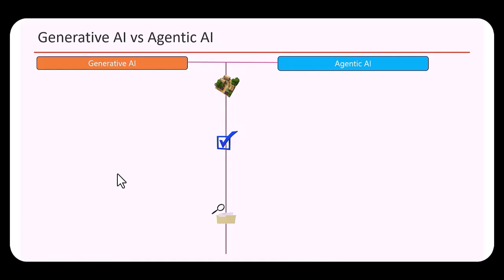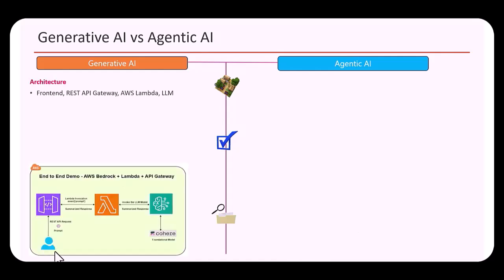Let's look at a common architecture for a generative AI application. You have a frontend through which the user sends queries, then a REST API, maybe a Lambda function, then Amazon Bedrock, and some underlying foundation model.